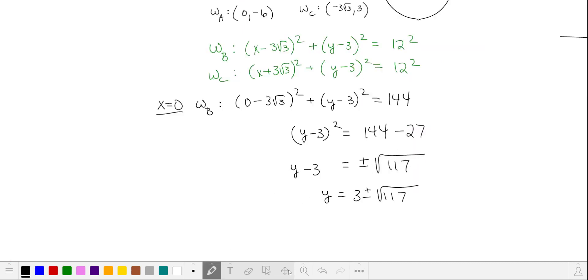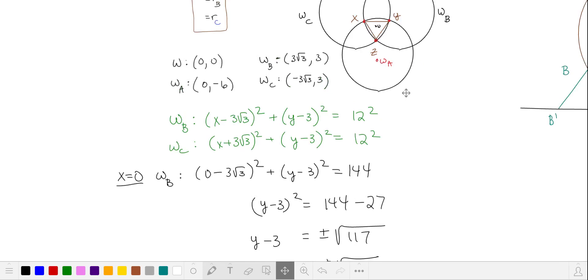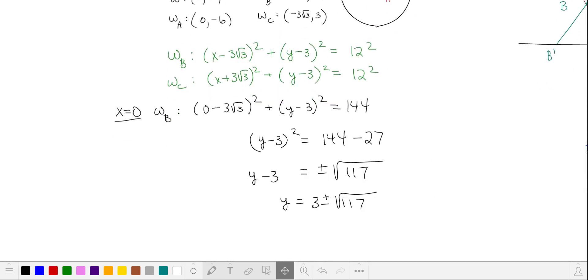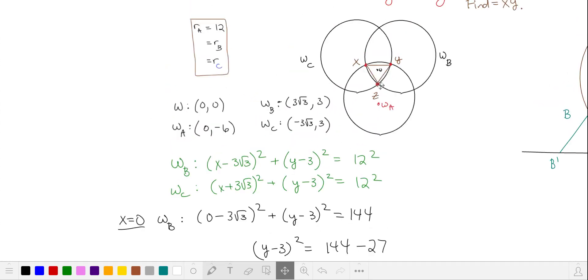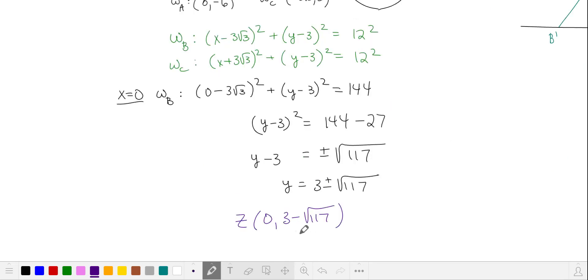Subtracting and taking the square root, we get two solutions for y. The y-coordinate of z is going to be the smaller of those solutions, the one that forms a vertex of our smaller equilateral triangle. So z has y-coordinate 3 minus the square root of 117.